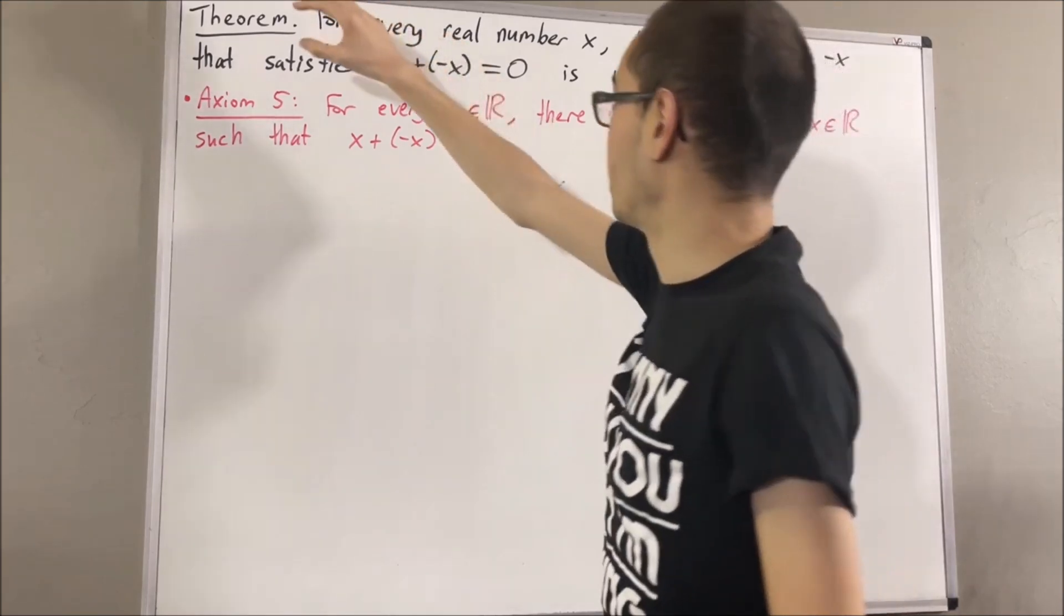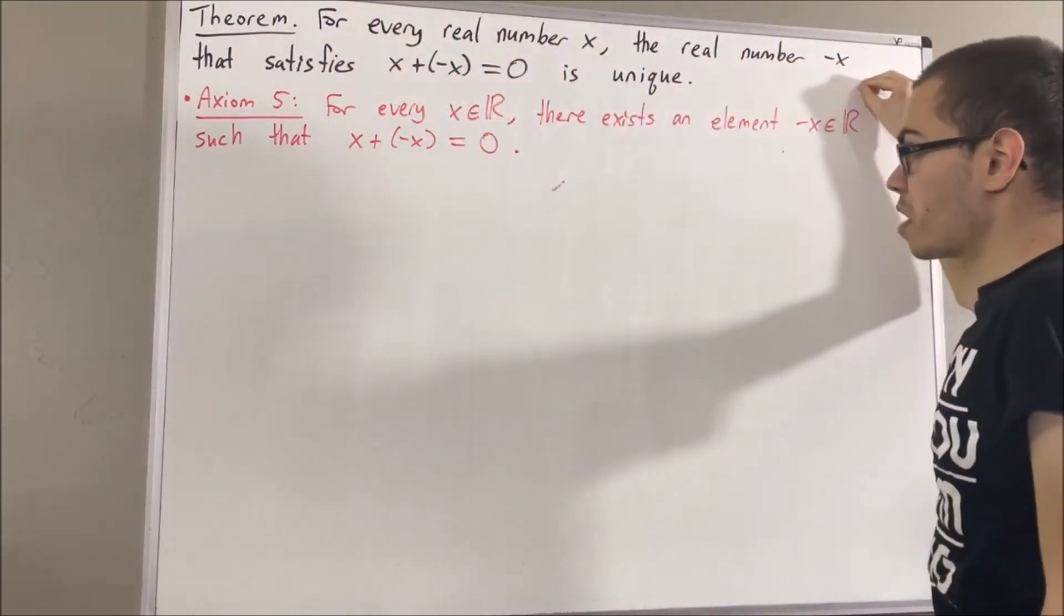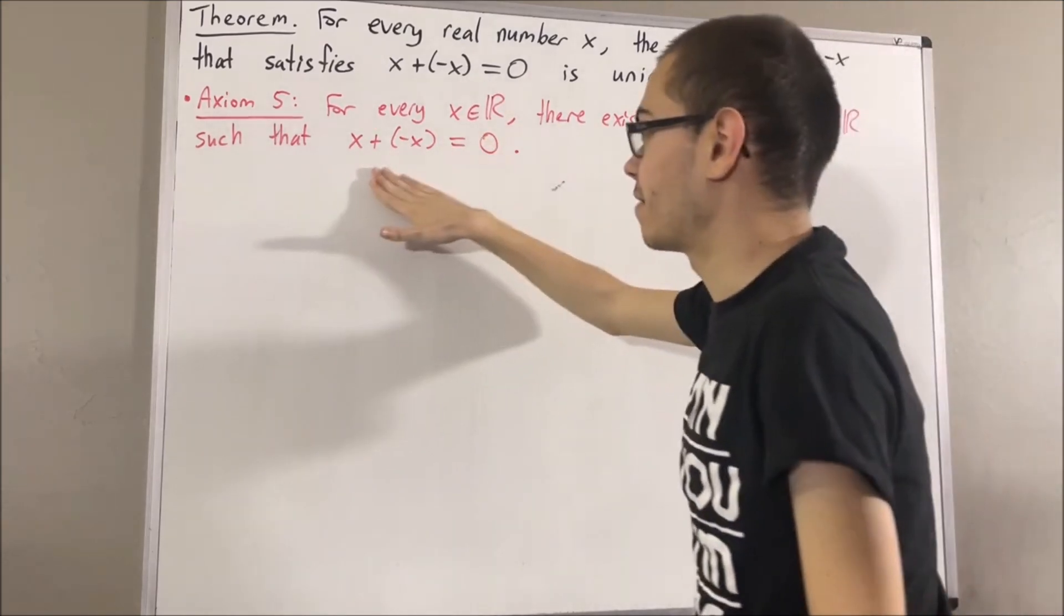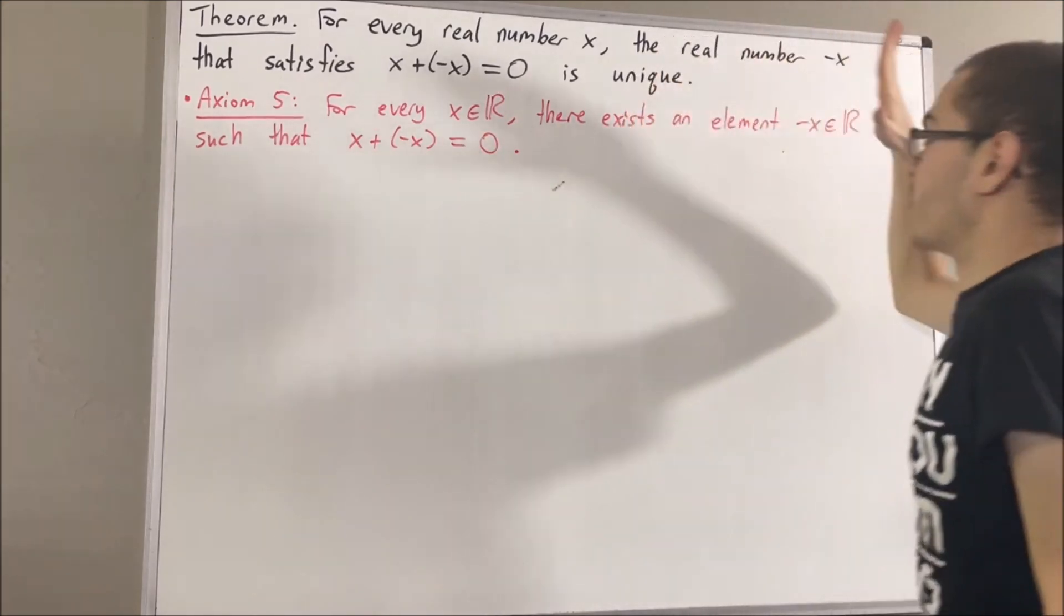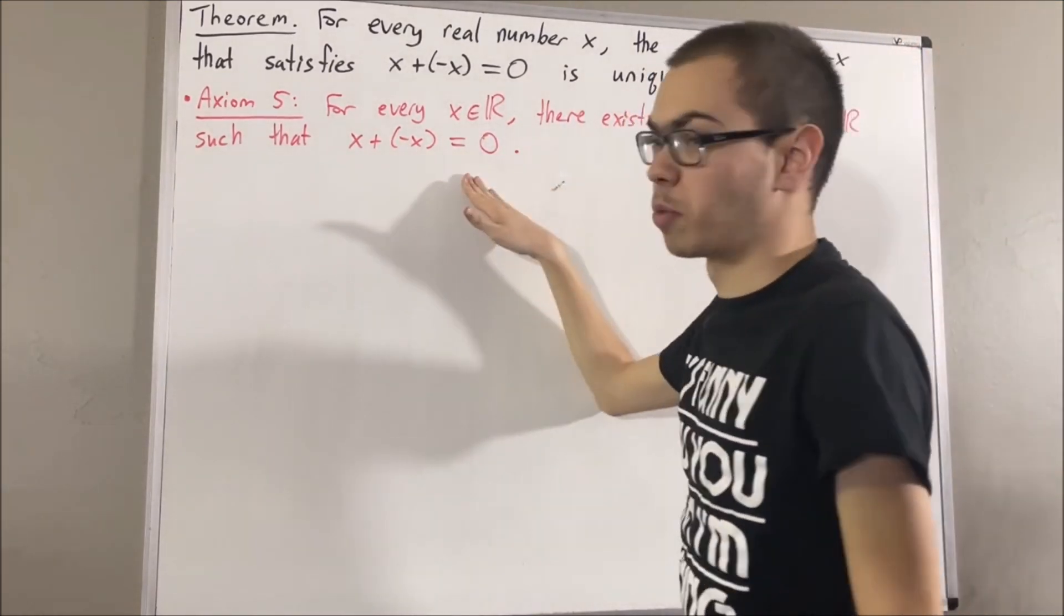Now, the whole point of this theorem is we're trying to prove that this real number negative x that satisfies this property is the only real number that satisfies this property.